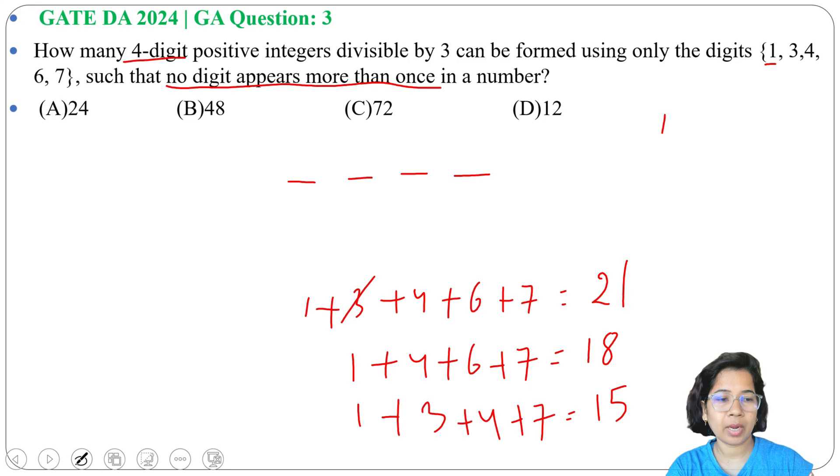There can be 2 combinations: one is 1, 4, 6, 7 and another is 1, 3, 4, 7. By these 2 combinations the number is divisible by 3, and here it's written no digit appears more than once. For the 4th position, if there are 4 possibilities, then for the next position 3 possibilities, for the next 2 possibilities, for the next 1 possibility. So you can generate 4 factorial numbers that are divisible by 3.